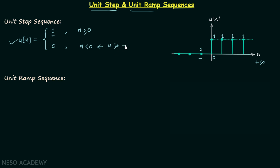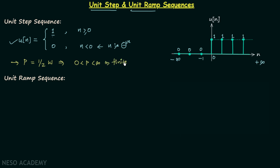Whenever n is negative, u[n] will be equal to zero. Here n is minus 1, that is n is negative, therefore u[n] is zero. Similarly, it will remain zero up to n equal to minus infinity. We also calculated the average power of u[n] and found it is equal to 1/2 watts, which is finite — greater than zero but less than infinity. Whenever the average power is finite, the signal is a power signal; therefore the unit step sequence is a power signal.